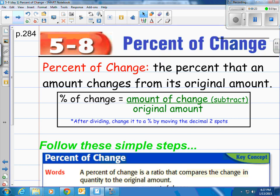What is the percent of change? Percent of change that we're talking about here is the percent that an amount changes from its original amount. In the box here we've made it simple for you. To calculate the percent of change, all you have to do is take the amount of the change, which is simply subtracting the two values, and divide it by the original amount. Then of course you change it into a percent by moving the decimal two spots to the right.